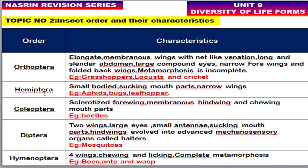Hemiptera — examples include aphids, bugs, and leafhoppers. These insects have a small body and sucking mouthparts, and the wings are narrow. Coleoptera — examples include beetles, which have sclerotized forewings, membranous hindwings, and chewing mouthparts.